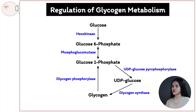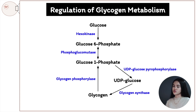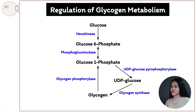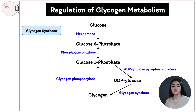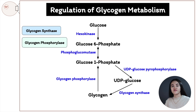When we break down glycogen, glycogen phosphorylase breaks the alpha-1,4 linkages forming glucose 1-phosphate. The phosphoglucomutase reaction is reversible, so glucose 1-phosphate is converted back to glucose 6-phosphate, and then glucose 6-phosphate is converted to glucose by glucose 6-phosphatase. The key enzymes in these pathways are glycogen synthase and glycogen phosphorylase.